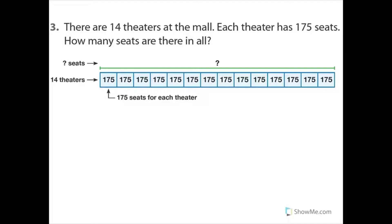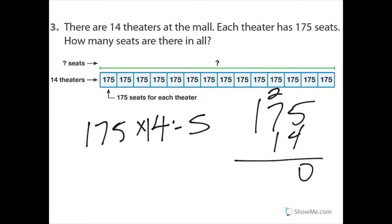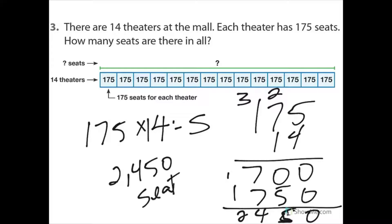There are 14 theaters at the mall. Each theater has 175 seats. How many seats are there in all? So if we did 175 times 14, we'd have the number of seats, right? 4 times 5 is 20. 4 times 7 is 28, plus 2 is 30. 4 times 1 is 4, plus 3 is 7. And drop that 0. So 2,450 seats.